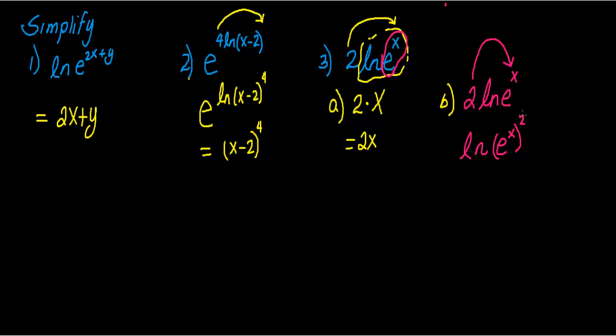Whenever you raise a power to another power, now these are the exponent rules. Whenever you raise a power to a power, you multiply the powers. So this becomes e to the x times 2, which is 2x. And now, natural log of e to the 2x by the inverse property of logarithms, this means that this is equal to 2x. So you get the same answer.